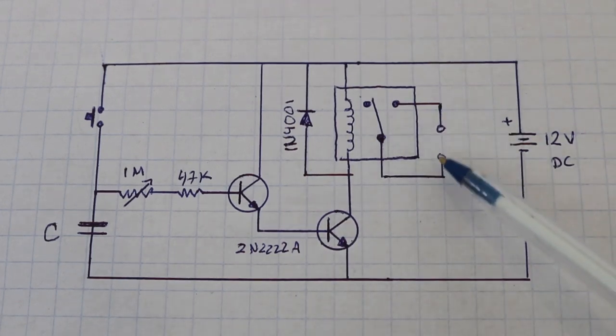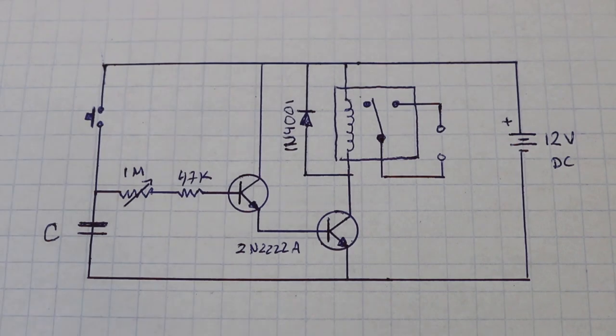So, these two points act as a normally open switch that is closed when we press the button. Additionally, we can use the common contact and this other contact and we will have a normally closed switch.